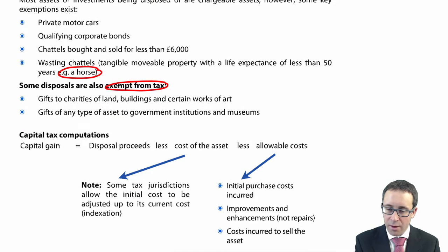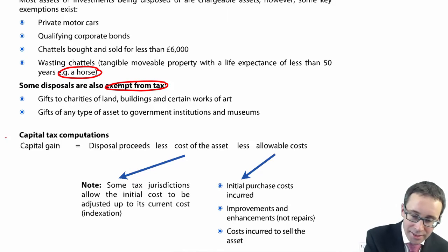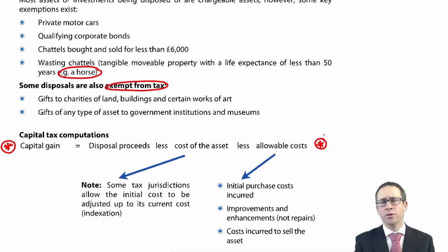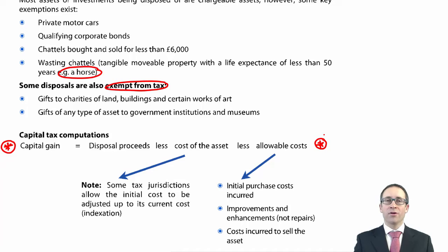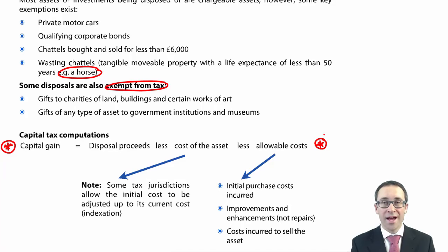It is focusing upon the capital tax computation. This is key — this is how you work out the capital gain, which is then used to work out the tax that you pay. It's very similar to what you have with regards to a profit or loss on disposal, but we need to look at it from a tax perspective. You take the proceeds — the amount of cash that you have received — and deduct the cost of the asset.